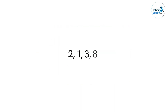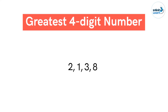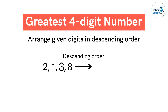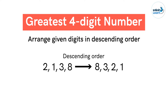To find the greatest number, we need to arrange the given digits 2, 1, 3, 8 in descending order. The descending order for digits 2, 1, 3, 8 will be 8, 3, 2, 1. Hence, the greatest number formed by the digits 2, 1, 3, 8 is 8321.